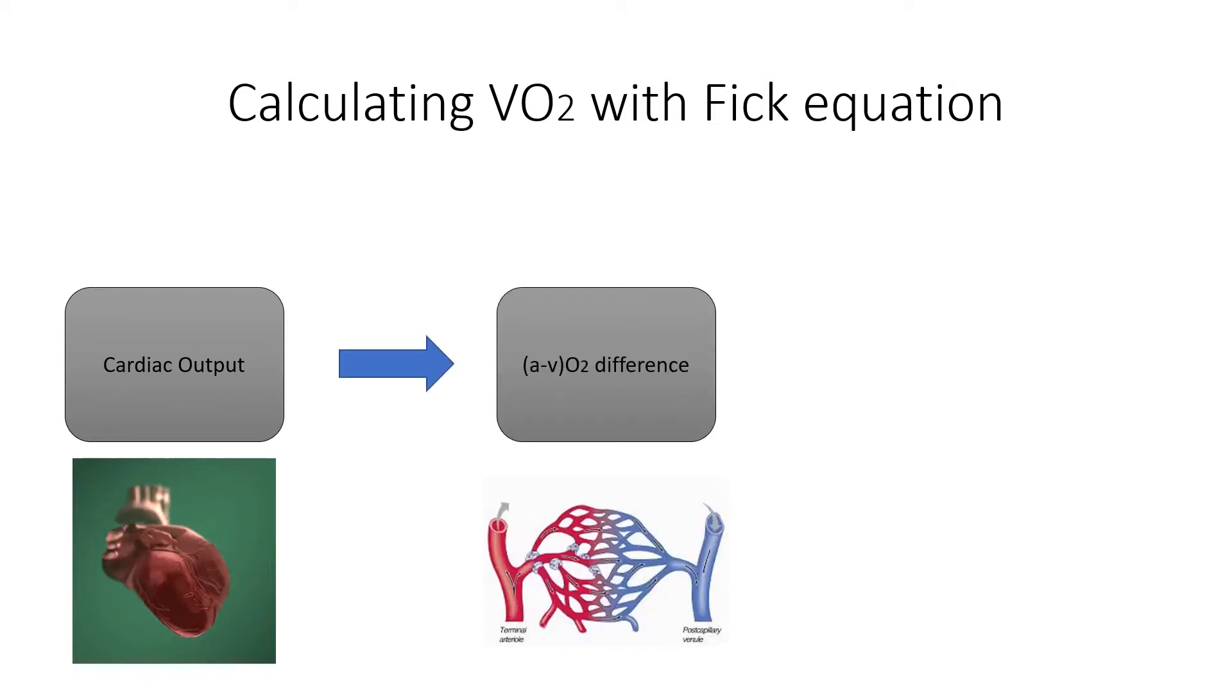Then we have the a-vO2 difference. That is the differential in oxygen from the arteries, the oxygen being provided to the tissue, subtracted from the leftover venous oxygen in the blood.